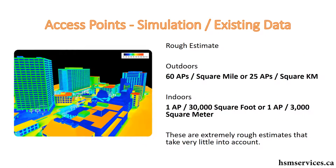As a rough estimate, you can put 60 access points per square mile outdoors, which is roughly 25 access points per square kilometer. Indoors, you need one access point for every 30,000 square feet, or 3,000 square meters. These are terrible rough estimates, by the way. In my opinion, you need much, much more APs than that.